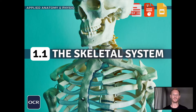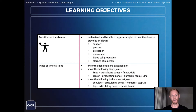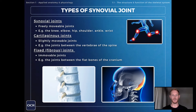Hello and welcome to another complete OCR GCSE PE lesson. This video is on chapter one, the structure and function of the skeletal system, specifically the third learning objective, which requires you to know the definition of a synovial joint, plus information on hinge joints and ball and socket joints. A synovial joint is a freely movable joint, as opposed to a cartilaginous joint, which allows a little bit of movement, like the joints between the vertebrae of the spine.